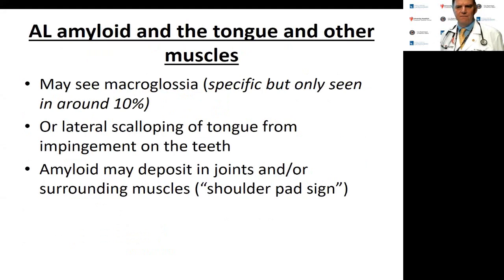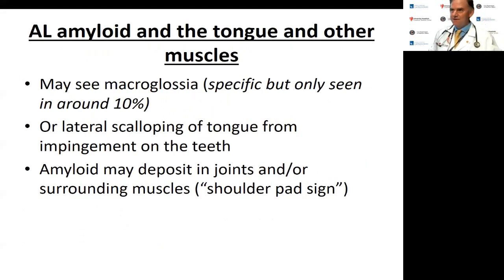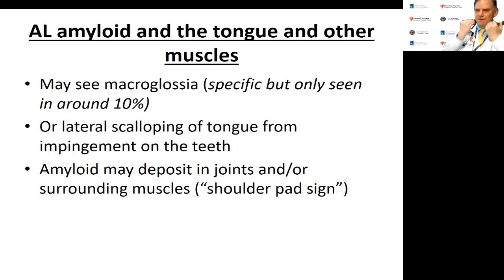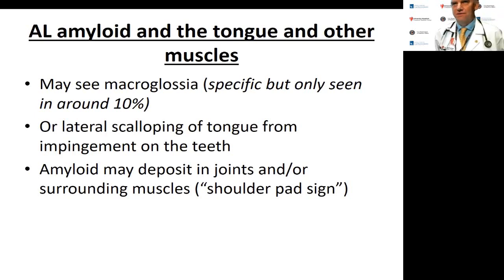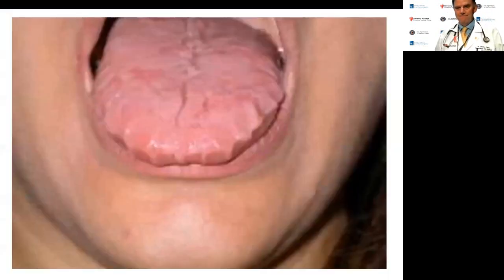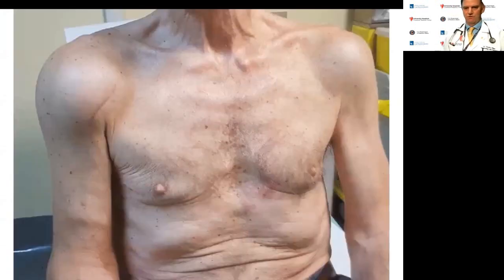Amyloid can also involve muscles and the tongue. Macroglossia is classically taught but only seen in around 10% of cases. Lateral scalloping of the tongue from tooth impingement is more commonly seen. Amyloid can also deposit in joints and surrounding muscles, causing the so-called shoulder pad sign.